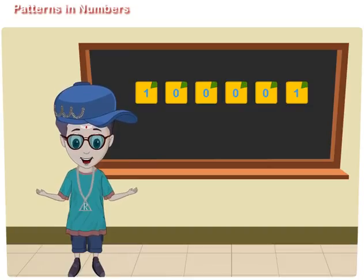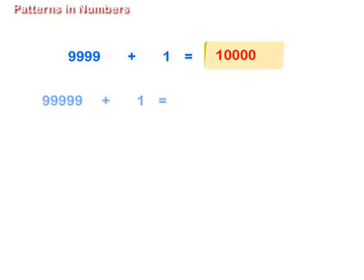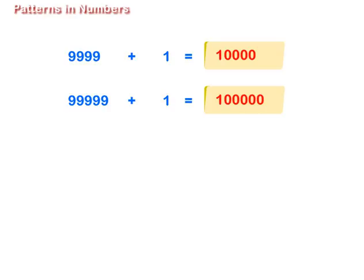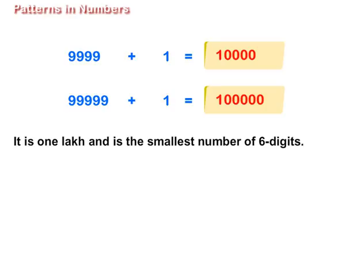Patterns in Numbers. We know that 9,999 plus 1 is equal to 10,000. 99,999 plus 1 is equal to 1,00,000. The number name for 1,00,000 is one lakh. It is the smallest number of 6 digits.